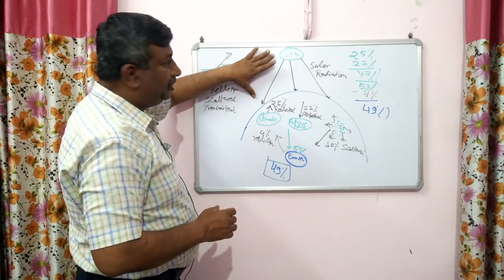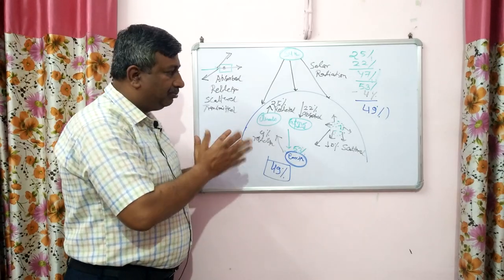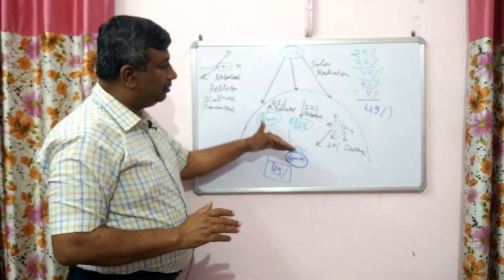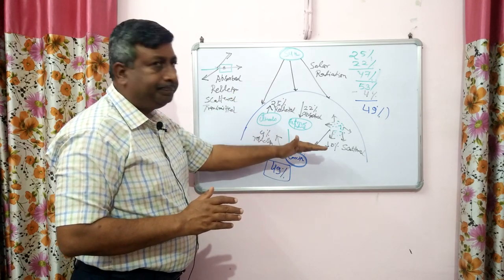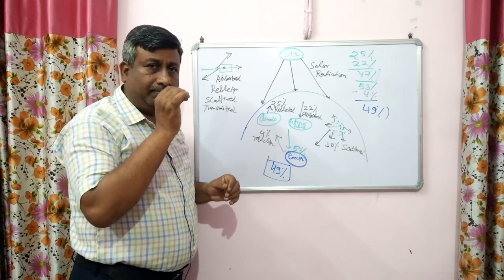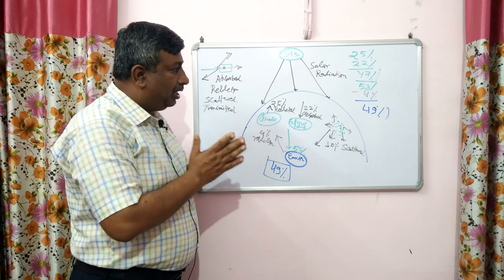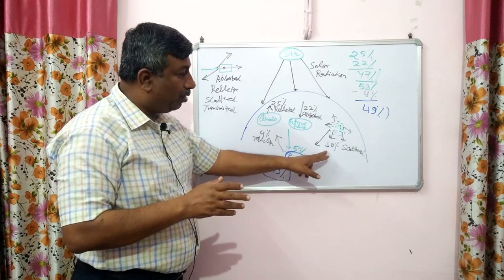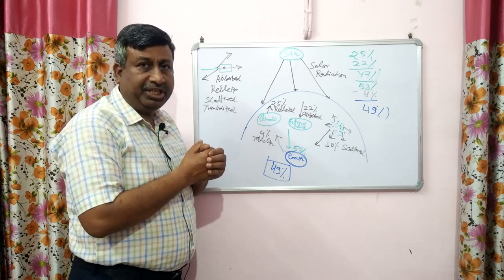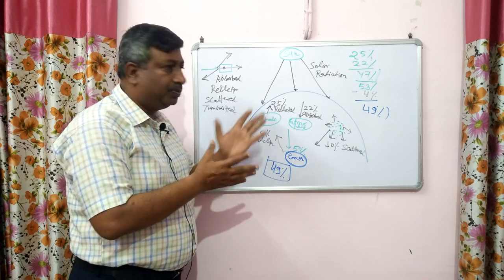Importantly, no change occurs between the sun and the outer atmosphere. All changes — reflection, absorption, and scattering — occur only within the atmosphere. Scattering is by dust particles and air molecules. If dust particles are more, there will be more scattering. Atmospheric gases like water vapor, CO2, methane, nitrous oxide, and ozone are responsible for absorption.